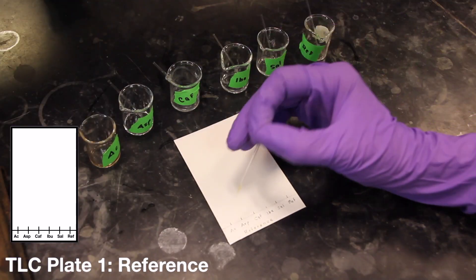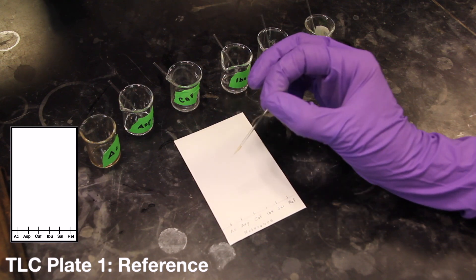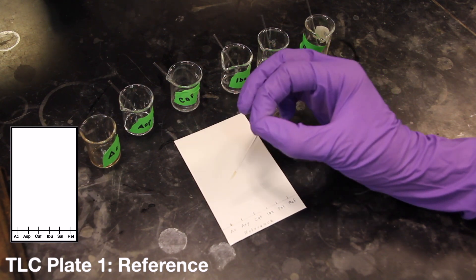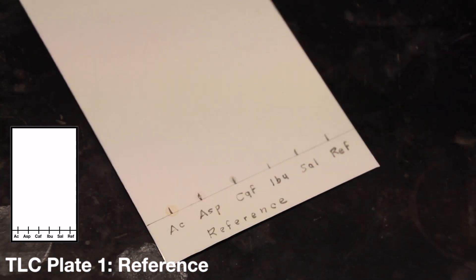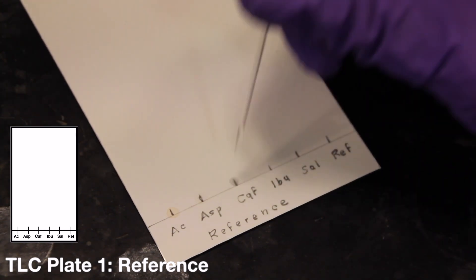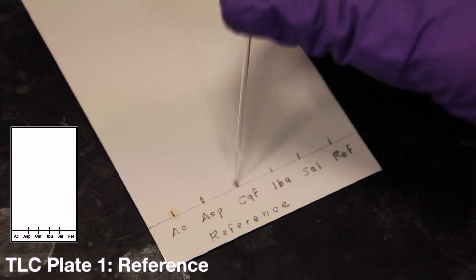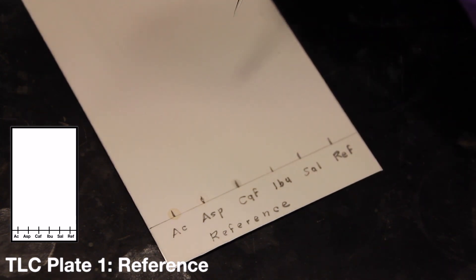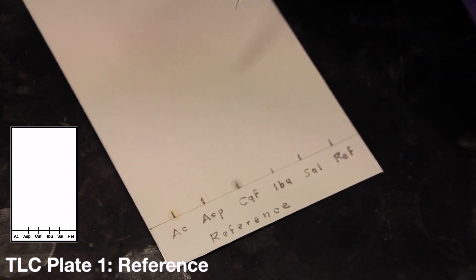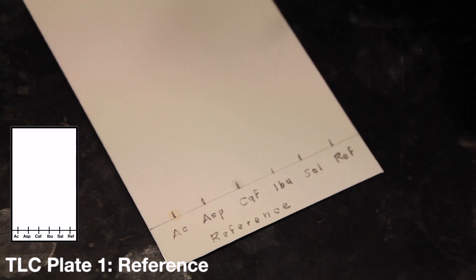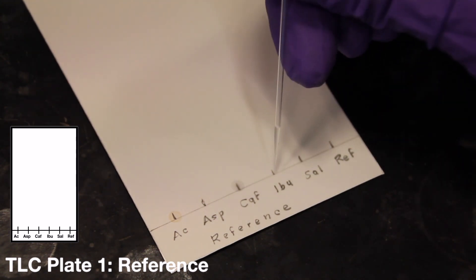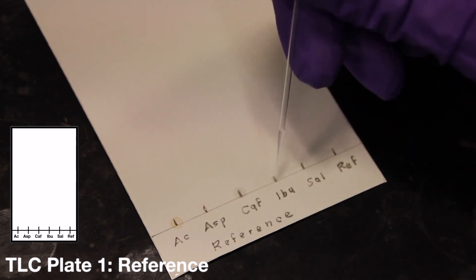Use the microcapillaries that you have prepared for the application. It is important that the spots be made as small as possible. The best results are going to be obtained by applying 5 quick touches of solution at each spot, allowing the spot to dry thoroughly between touches. Try to keep the spots no bigger than 2 mm in diameter. If the spots are too big, or if too much sample is applied, the spots will overlap one another after development, making interpretation difficult.